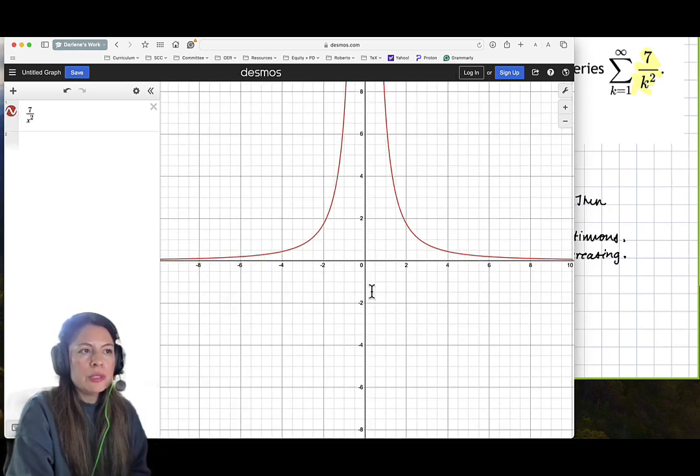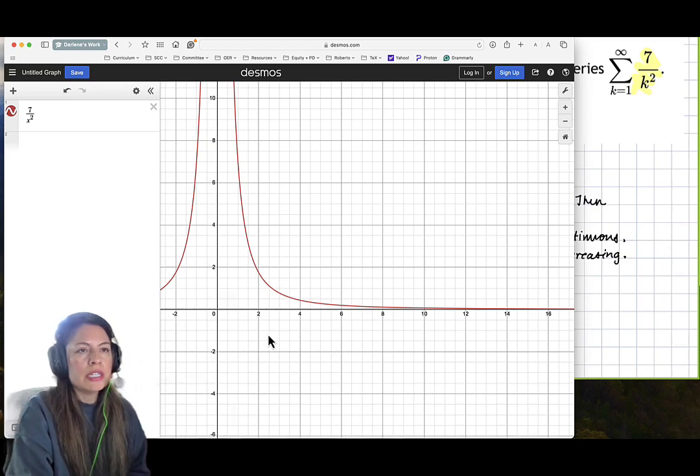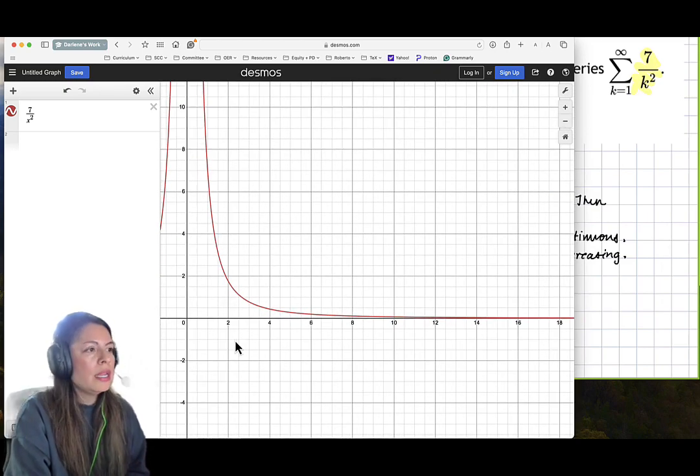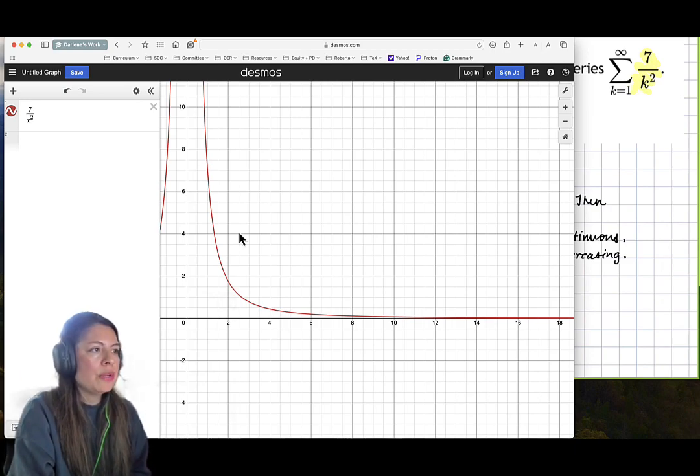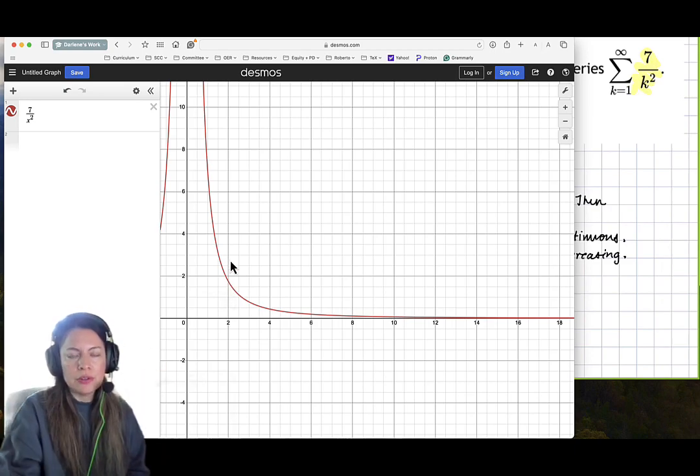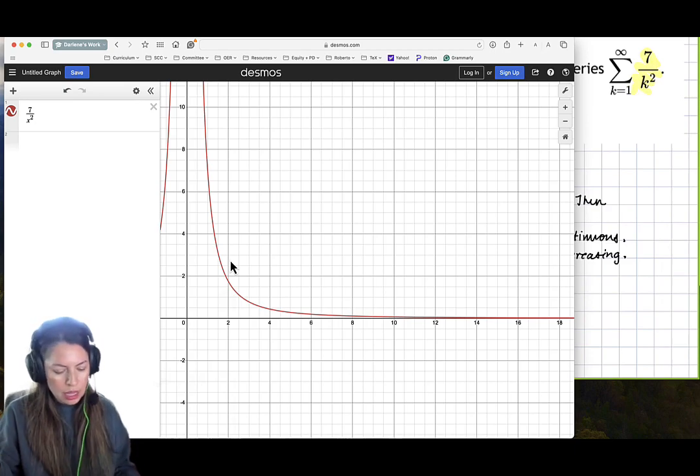We don't look at the negative values because our sequence doesn't start or series doesn't start until after 1. And we're looking for the first to 45th terms. So we can see that in the first quadrant, it's definitely decreasing for greater than or equal to 1 and on.